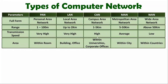When it comes to area coverage, Personal Area Network can be established within a room. Local Area Network can be established inside a building or offices. Campus Area Network can be established within universities, like MIT of USA or the IITs of India, and also in corporate offices like Microsoft and TCS. Metropolitan Area Network can be established over cities like Mumbai, Ahmedabad, New York, and Surat. Wide Area Network can be established over the region of countries.